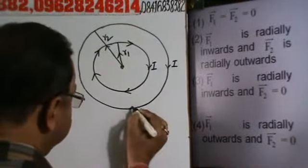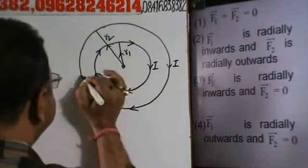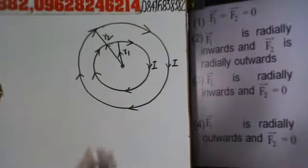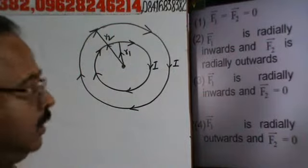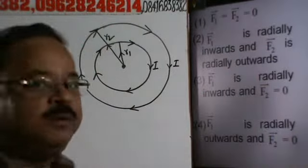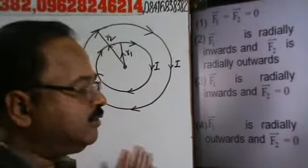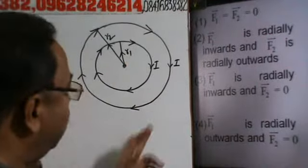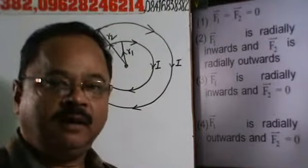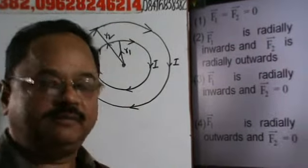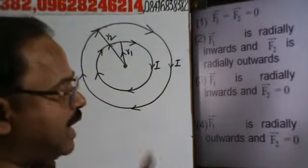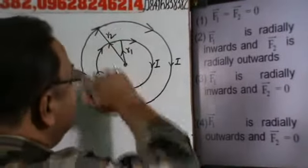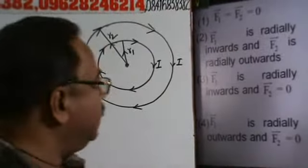This is a very simple concept. We know that the force between two current-carrying conductors depends on the direction of current. Since the direction of current is the same in both solenoids, each segment of the inner conductor will attract the outer conductor, and each segment of the outer conductor will attract the inner conductor.